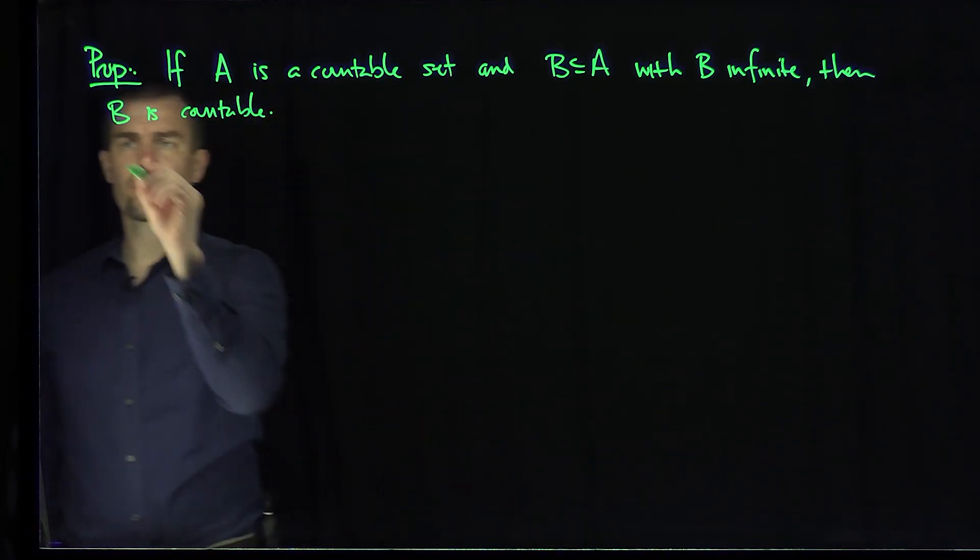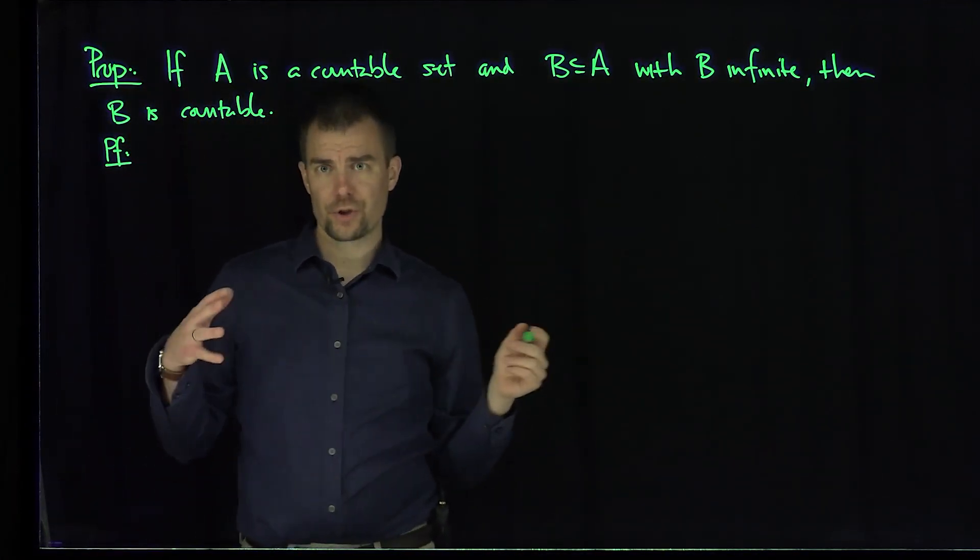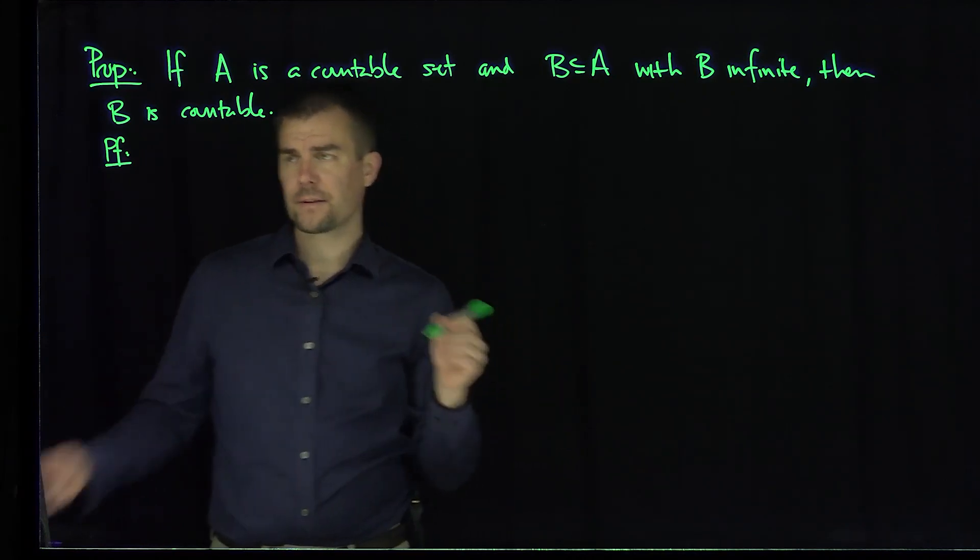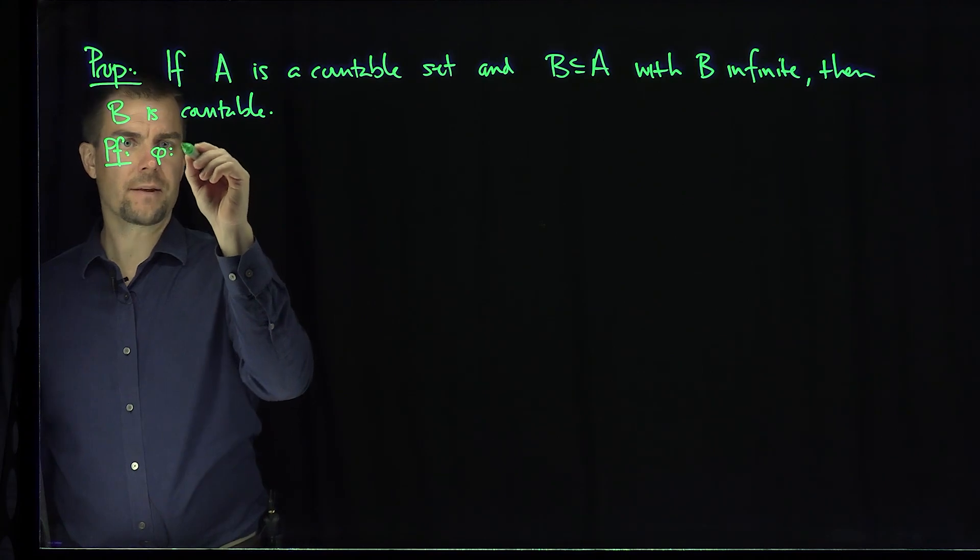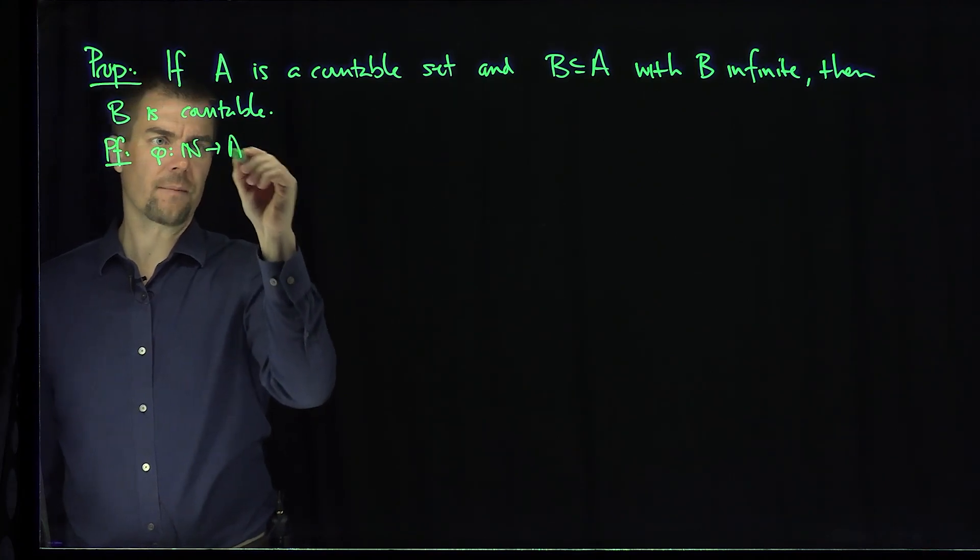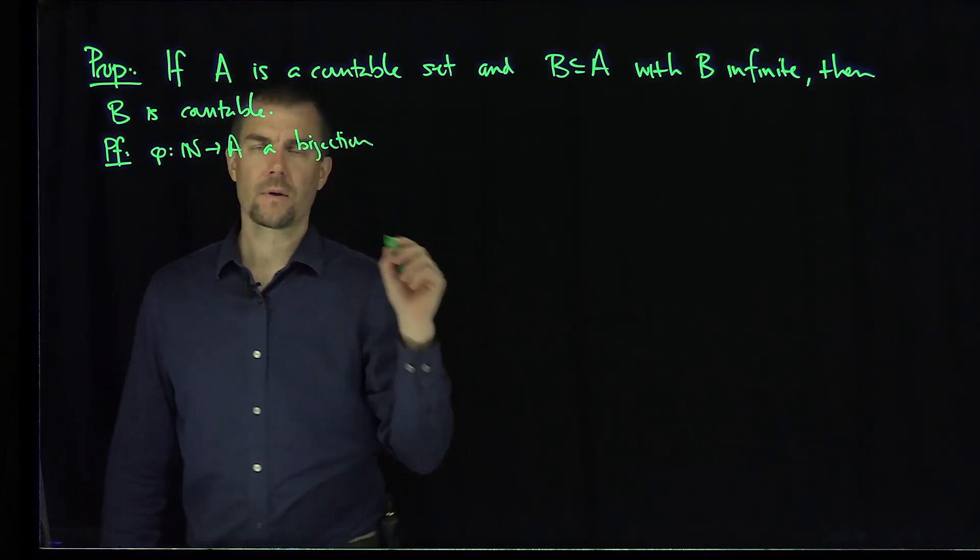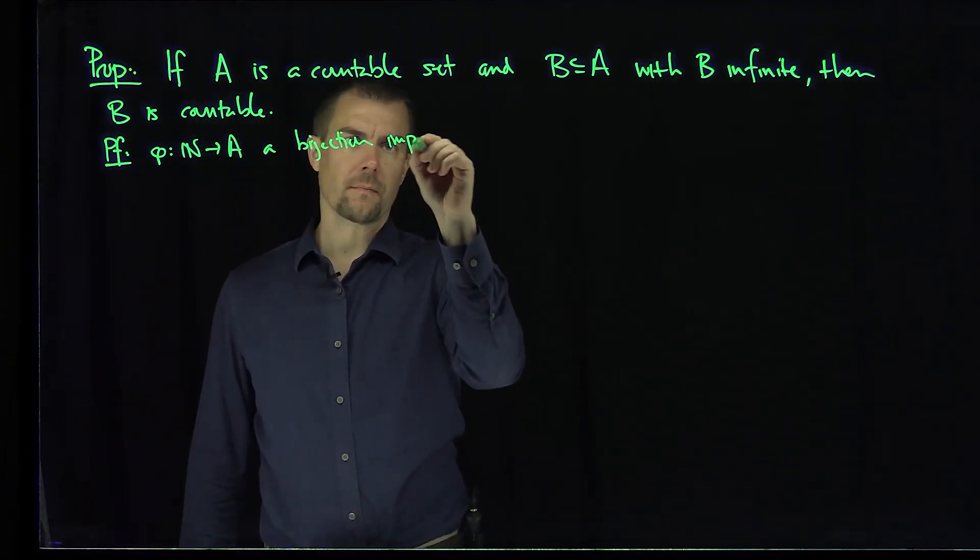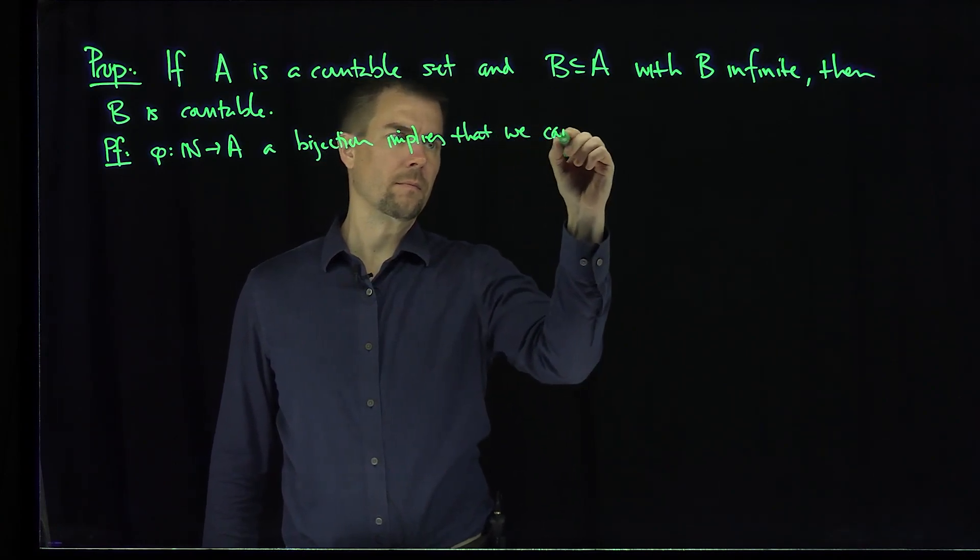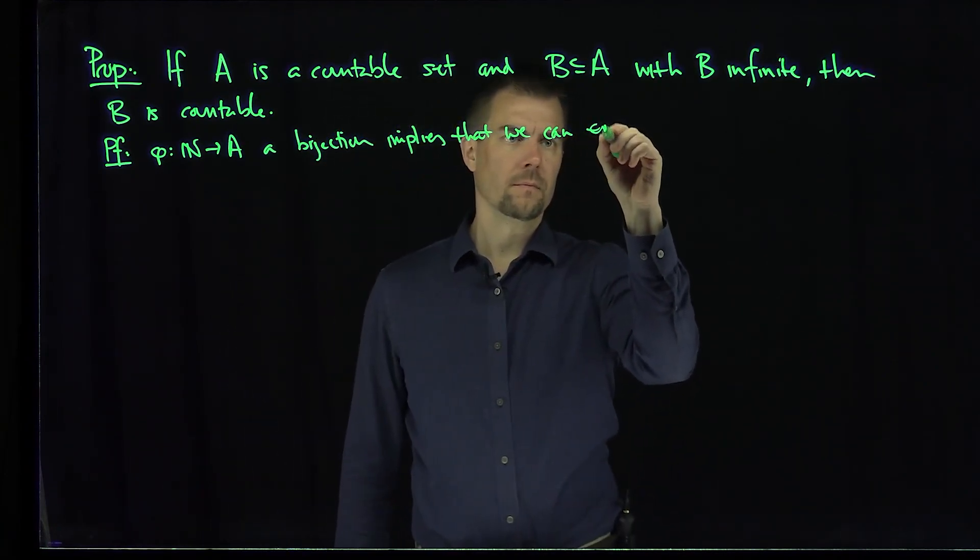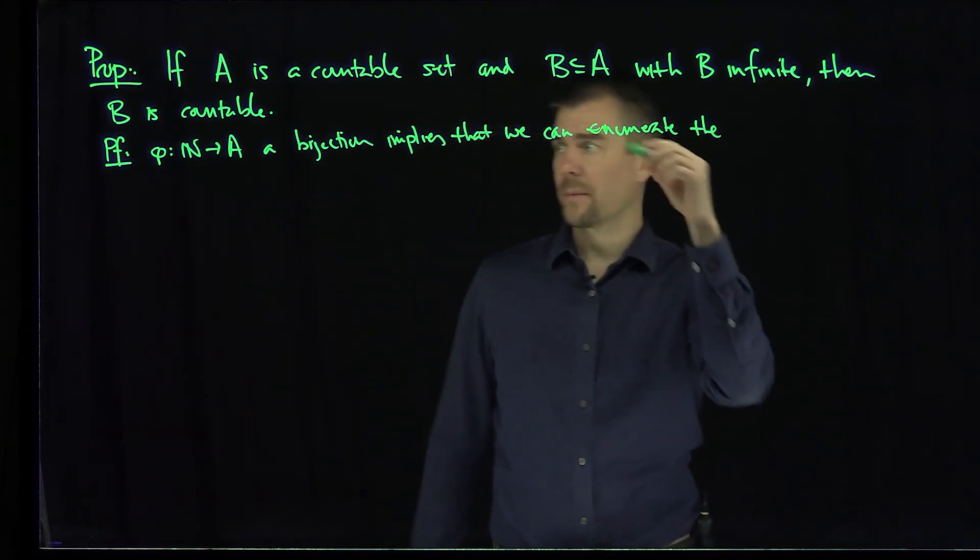So here's the proof. Since I can find a bijection between A and N, since I can find a mapping phi which takes N into A, a bijection implies that we can enumerate the elements of A.